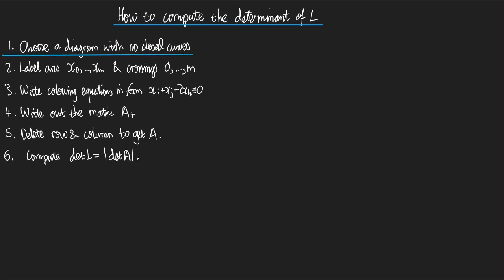So the first step is to choose a diagram of your link L that has no closed curves in it. So let me choose it. Let me choose a link L and a diagram of it. Let's do this guy, L4A1, I think it's called.